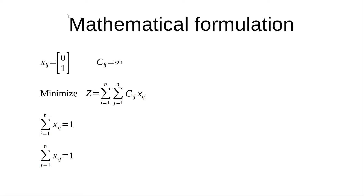Now let's have a look at the mathematical formulation of the problem. If the salesman travels from city I to city J, Xij will be 1; otherwise it's going to be zero. The cost index to travel from city I to the same city I we will take as infinity, because we wish to avoid this — travel to the same city is not permitted. So we have to minimize the function Z, which will be the summation over I=1 to N and J=1 to N of Cij times Xij.